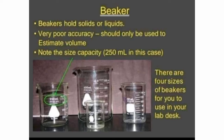The beaker has very poor accuracy and should only be used to estimate volumes. It comes in four different sizes: 100 ml, 250 ml, 500 ml, and 1000 ml. Note the size of the beaker and then pour the required amount of solid or liquid into it.